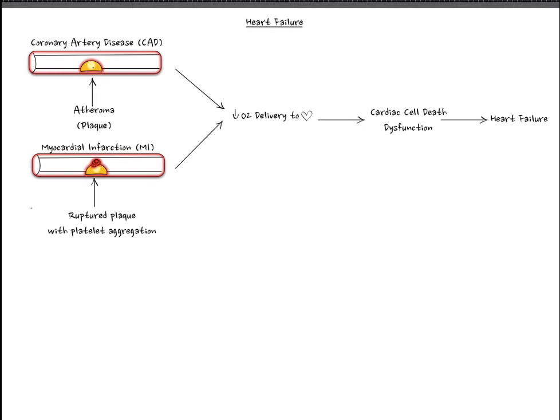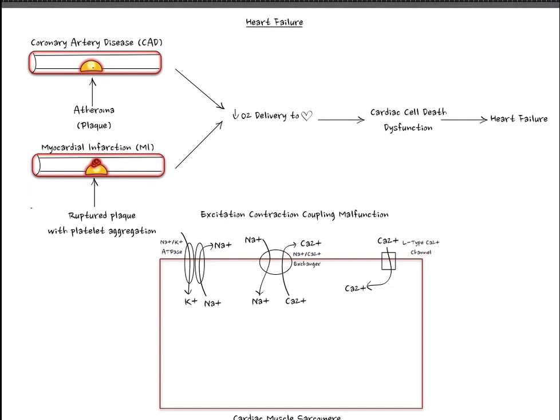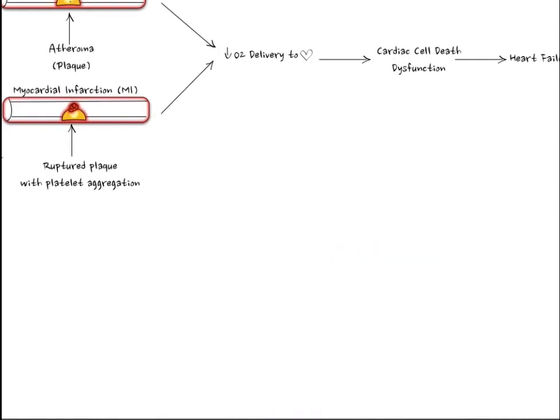The most common manifestation of heart failure is decreased cardiac output. The reason this happens is due to malfunctions in excitation-contraction coupling within the heart muscles. So first let's talk about the excitation-contraction coupling process within the cardiac sarcomere.